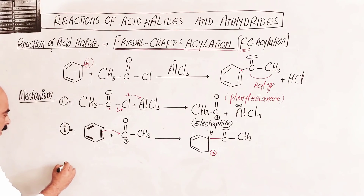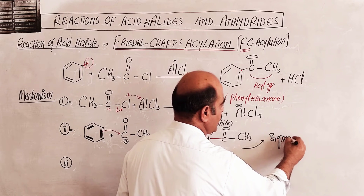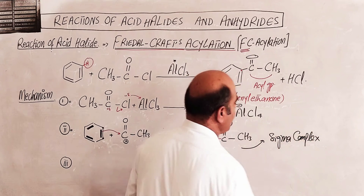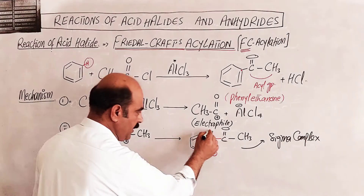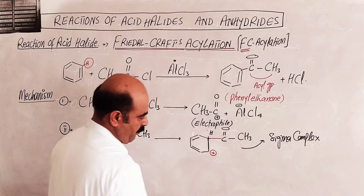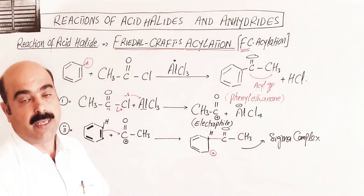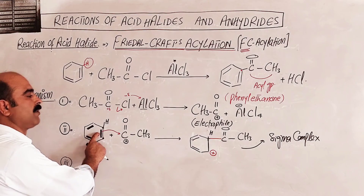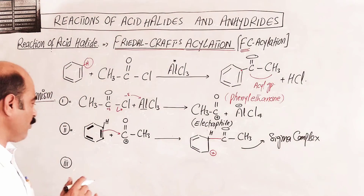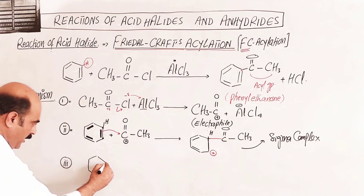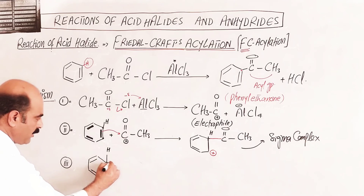Step two — electrophilic attack: the acylium ion attacks the benzene ring. The intermediate formed is called a sigma complex. The sigma complex is less stable than benzene because the aromaticity is disrupted. This sigma complex then undergoes the next step — proton transfer.